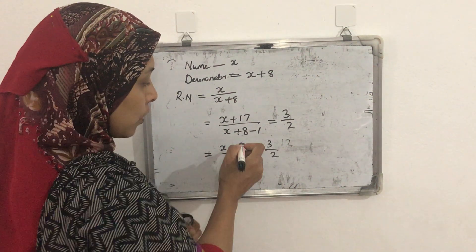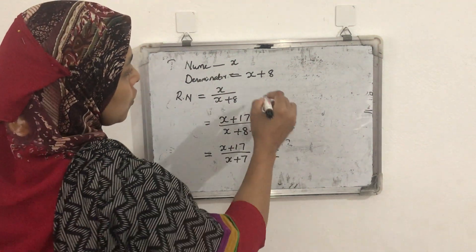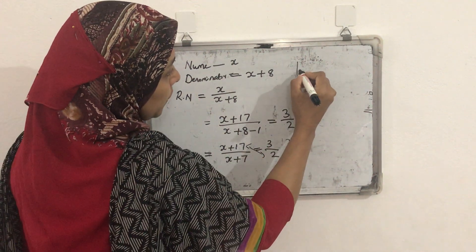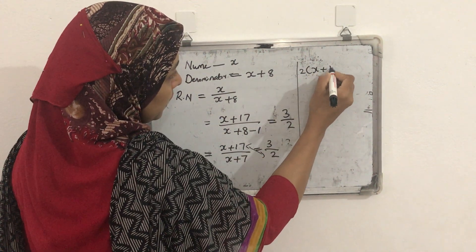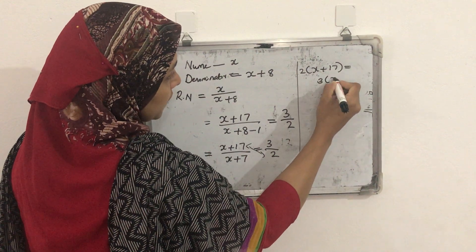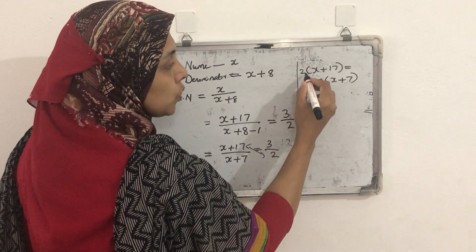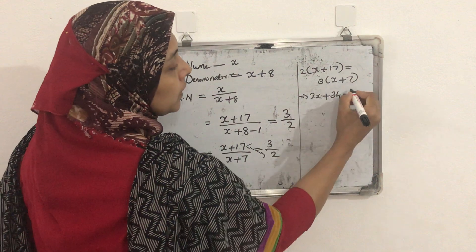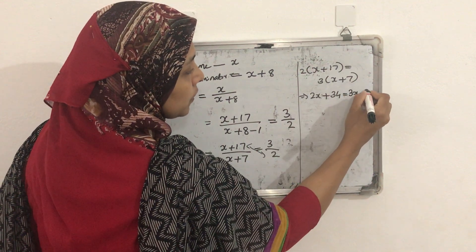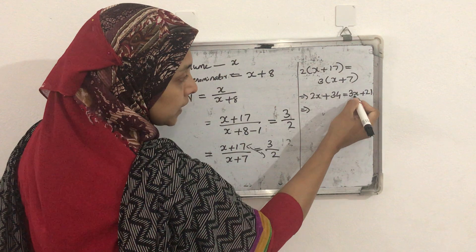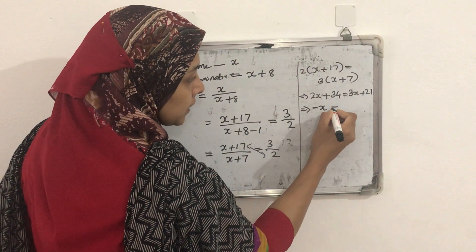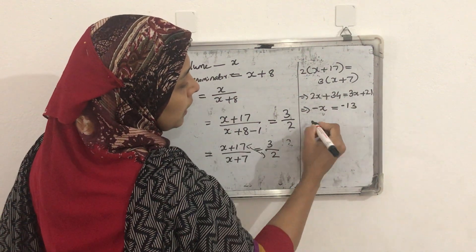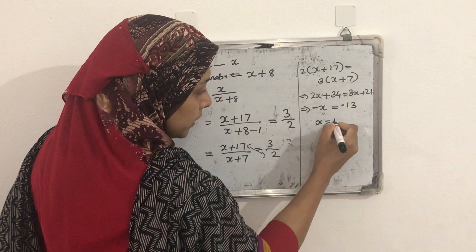By cross multiplication we can find the value of x. 2 × (x + 17) = 3 × (x + 7), which gives 2x + 34 = 3x + 21. This implies 2x − 3x = 21 − 34, so −x = −13, therefore x = 13.